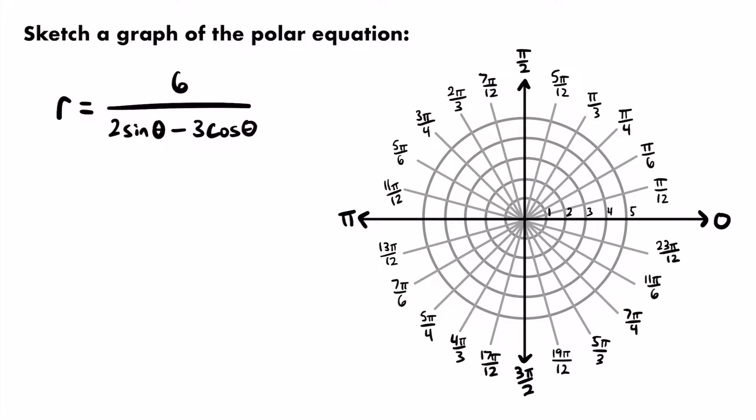We're not going to look at special polar graphs in this video. If you want to learn more about those, check out my lesson video on polar graphs. In this video we're going to take a slightly different approach: since we can't recognize this polar equation as any type of special polar graph, we can convert it into a rectangular equation using the conversion formulas for polar to rectangular coordinates.